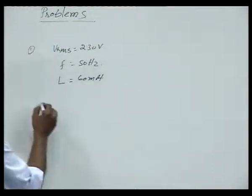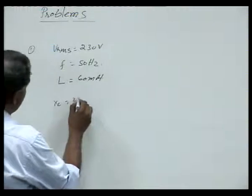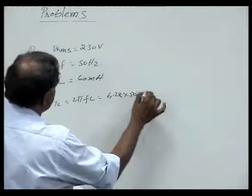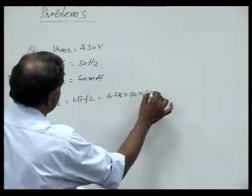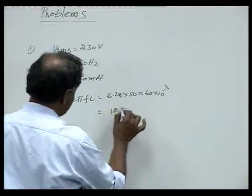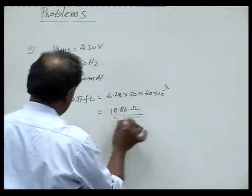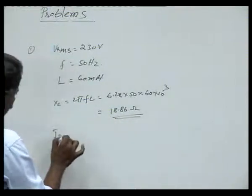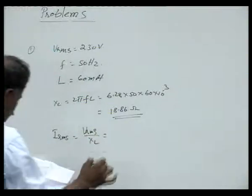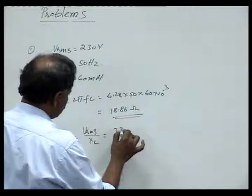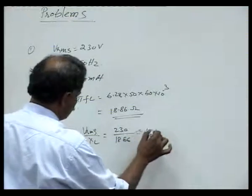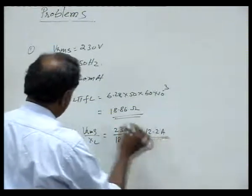Let us calculate the XL value: 2πFL = 6.28 into 50 hertz into 60 millihenries, that is 60 into 10 to the power of minus 3. This comes out to be 18.86 ohms — this will be the value of the inductive reactance. Therefore the value of RMS current is V_RMS upon XL, which comes out to be 230 volts divided by 18.86 ohms = 12.2 amperes of current that flows.